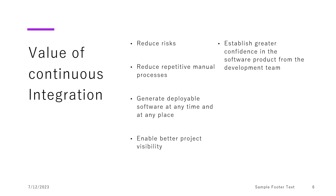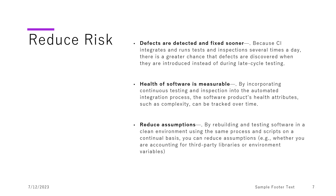First is reducing risk — a very important thing that continuous integration provides. Risk can be of different types. For example, the code we are writing may have defects. If those defects come up in production or higher environments, the cost of fixing them is greater because it takes more time, more effort, and multiple deployments and check-ins. By doing continuous integration — making sure the build and tests are running — we ensure defects are detected sooner. Because there are multiple tests running and you are doing check-ins several times a day, instead of identifying defects late in the testing cycle, we are identifying them early on.